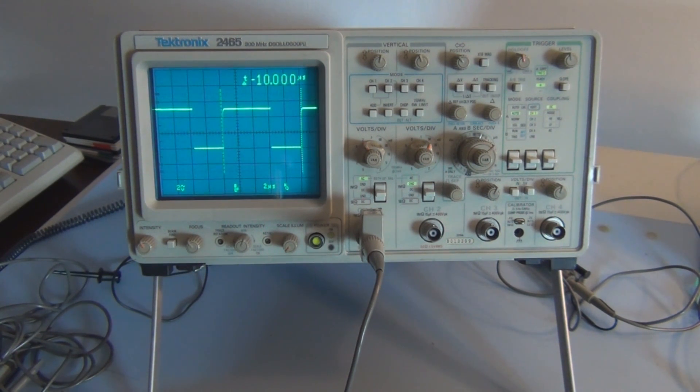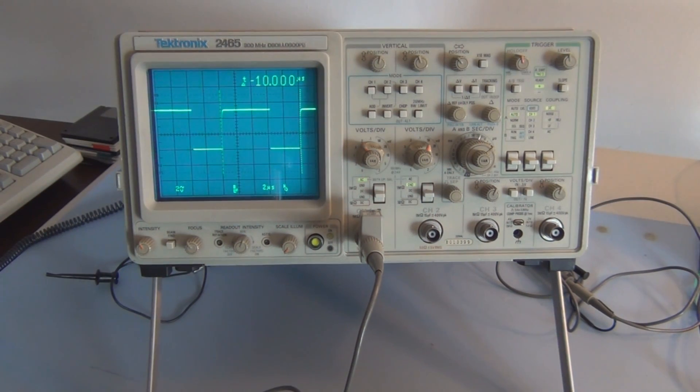So this is the Tektronix 2465, 300 megahertz oscilloscope. Purchased it off of eBay and so far so good along with the four scope leads I purchased separately. Thanks for watching, please subscribe and or comment. Now that I have an oscilloscope I can start investigating signals associated with digital and analog circuits.